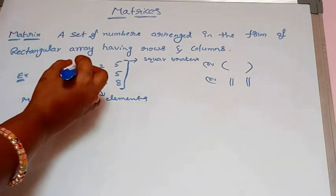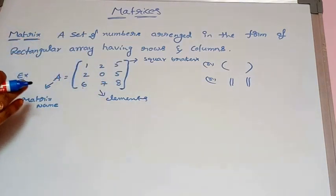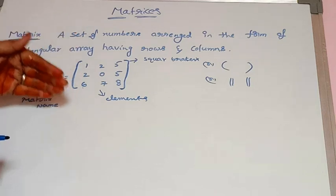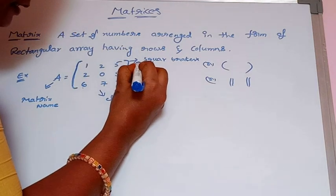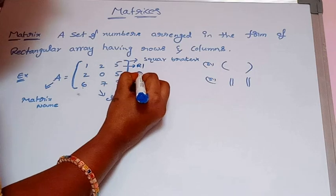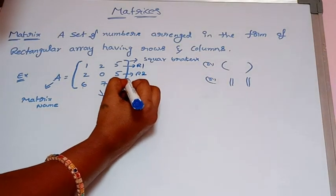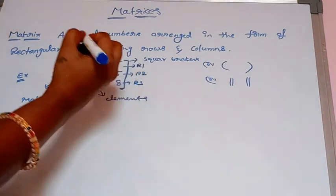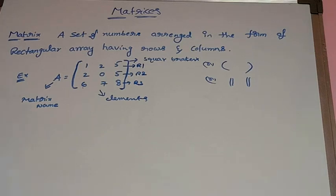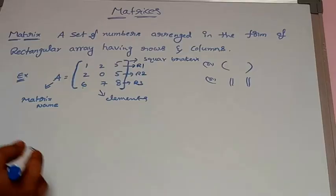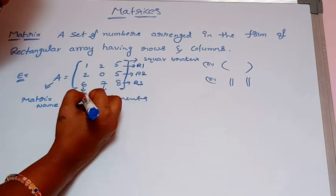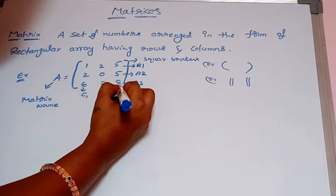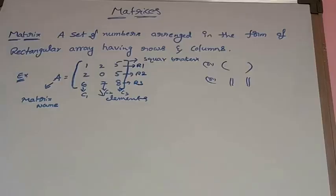We count top to bottom for rows. That means this is row 1, this is row 2, and this is row 3. Next, we count left to right for columns. That means this is column 1, column 2, and column 3.